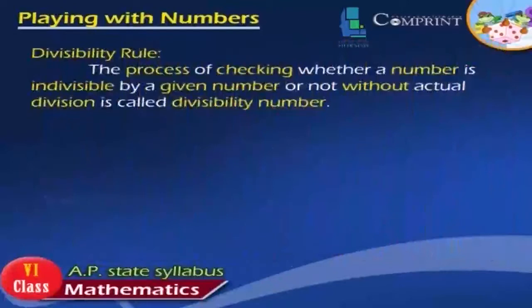Divisibility Rule: The process of checking whether a number is divisible by a given number or not without actual division is called the Divisibility Rule.